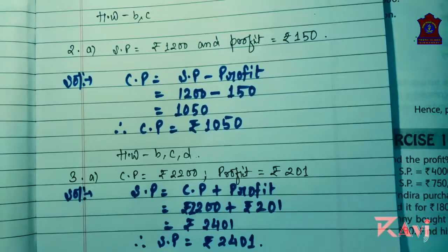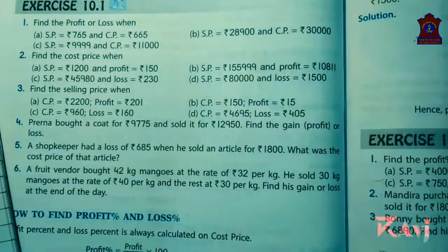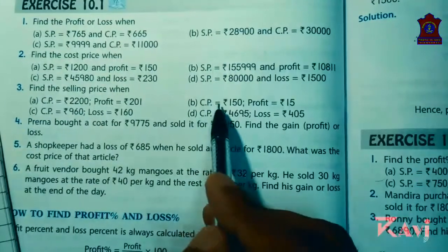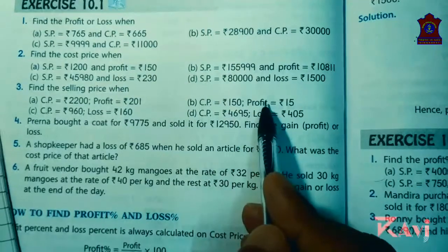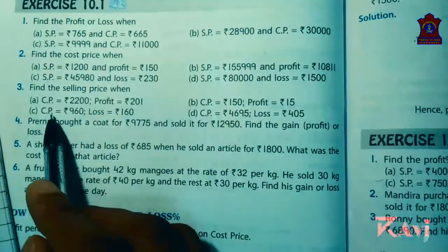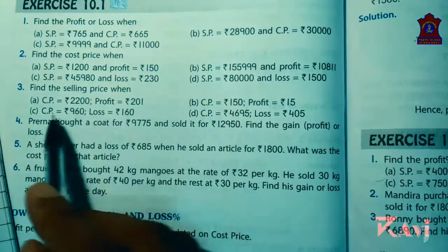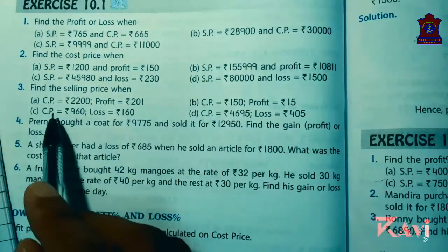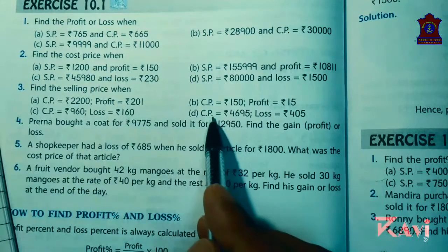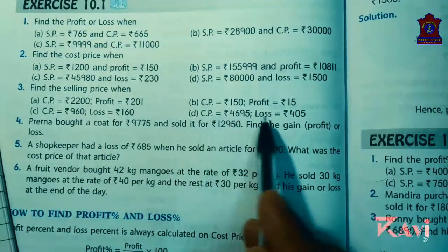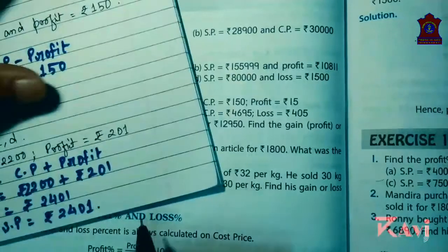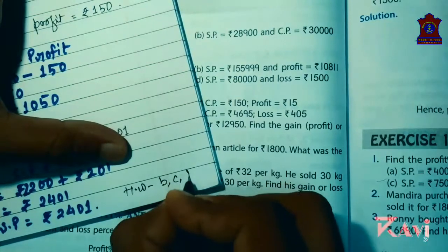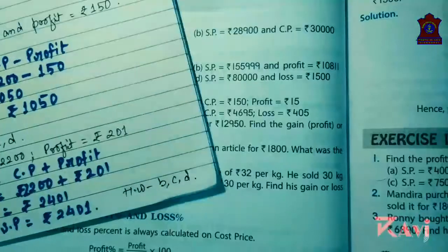See, CP and profit is given — you will be adding. Here CP and loss is given. What will be the SP? SP will be CP minus loss. Here also SP will be CP minus loss. Use the formula and you get the answer. Try other questions B, C and D by yourself.